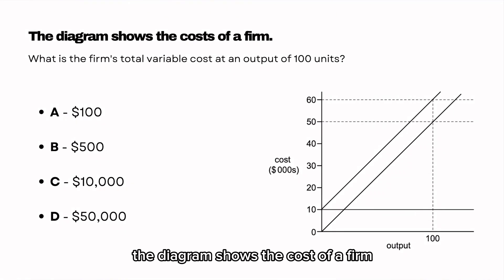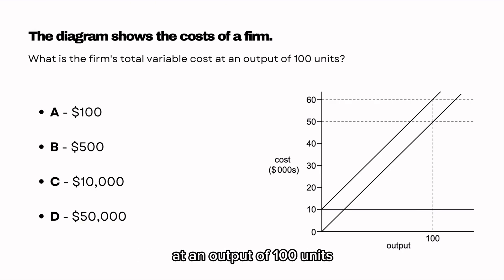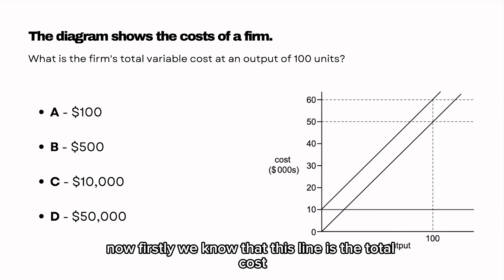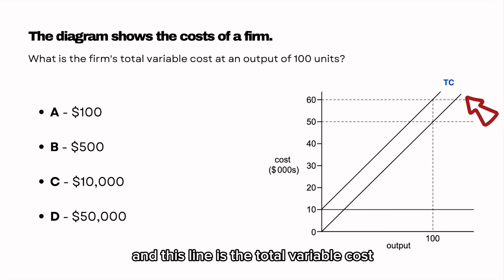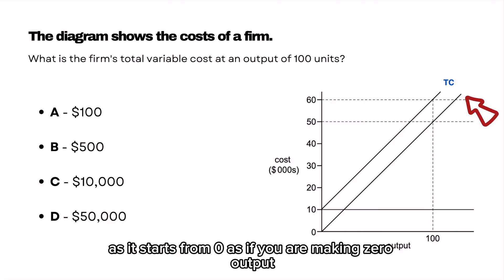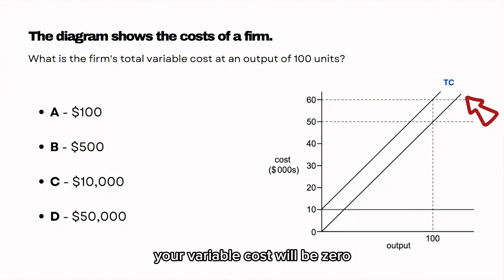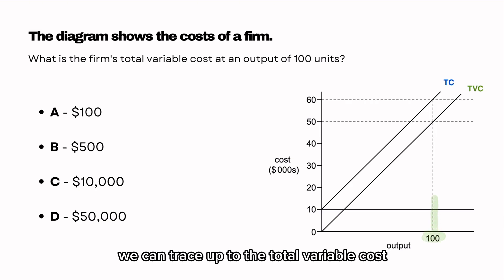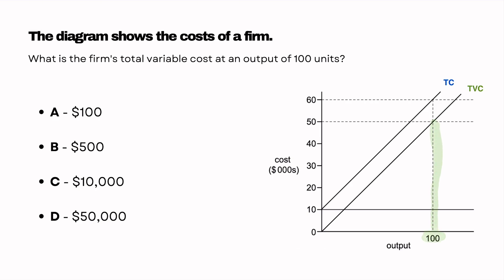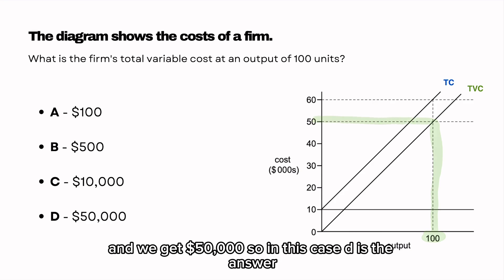The diagram shows the cost of a firm. What is the firm's total variable cost at an output of 100 units? The line starting at fixed costs is the total cost, and the line starting from zero is the total variable cost — because if you are making zero output, your variable cost will be zero. At the output of 100, we trace up to the total variable cost and get $50,000. So the answer is D.